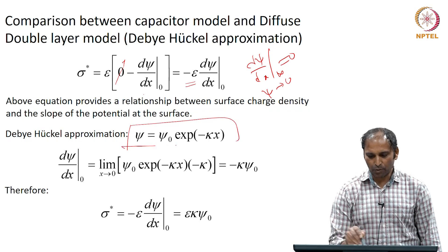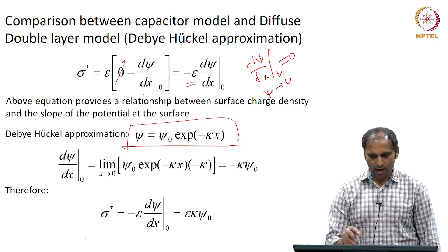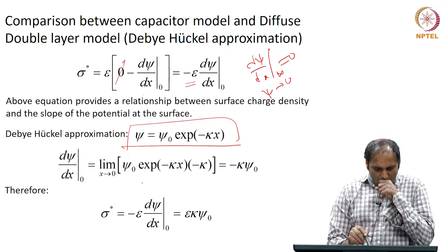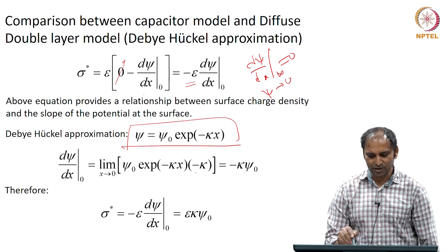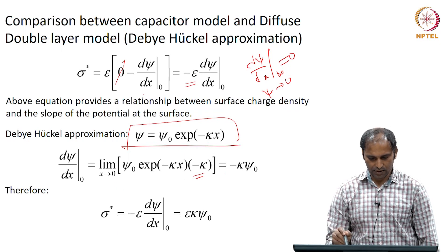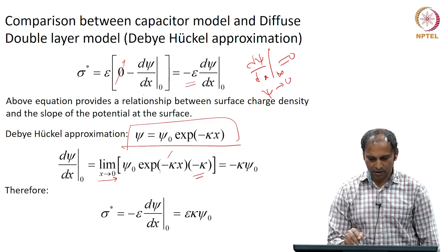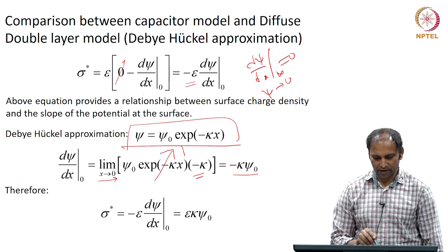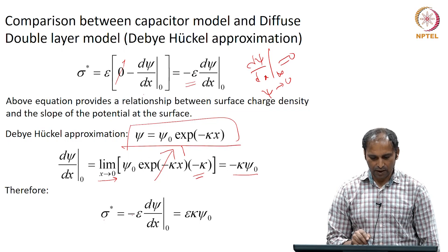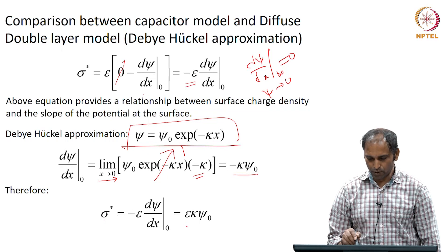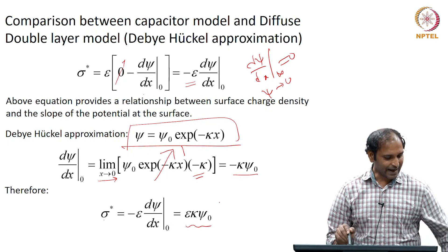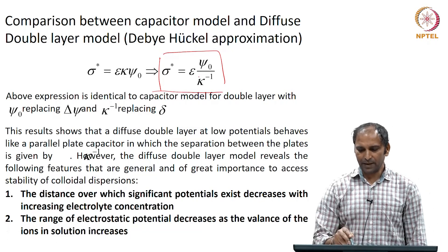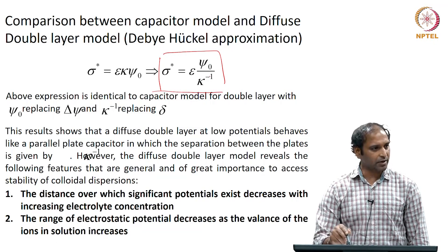Because we know the potential varies and falls in an exponential way, I can get dψ/dx at zero. So dψ/dx equals ψ₀ exp(−κx) times (−κ), and for x tending to zero, the exponential becomes 1, giving minus κ times ψ₀. Therefore σ*, which equals minus ε times dψ/dx at zero, equals εκψ₀. Rearranging, σ* equals ε times ψ₀ divided by κ⁻¹.